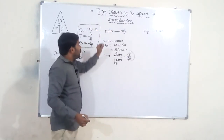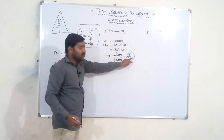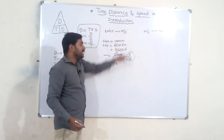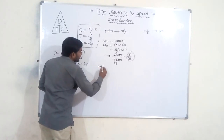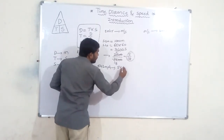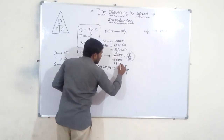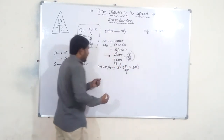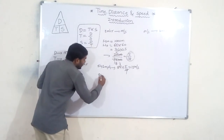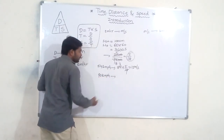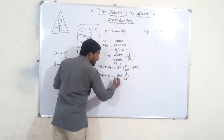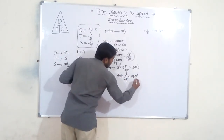So, to convert km per hour to meter per second, multiply by 5/18. For example, 54 km per hour equals 54 into 5 by 18, which is 15 meter per second. Similarly, 90 km per hour equals 90 into 5 by 18, which is 25 meter per second.